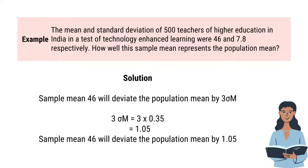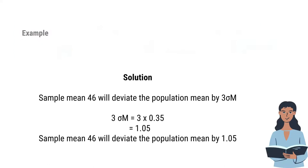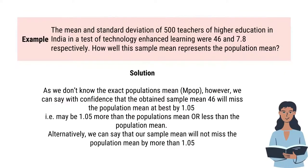The sample mean of 46 will deviate from the population mean by 3 sigma. So, 3 sigma equals 3 into standard error of mean, which is 3 into 0.35, equal to 1.05. The sample mean 46 will deviate from the population mean by 1.05. As we do not know the exact population mean, we can say with confidence that the obtained sample mean 46 will miss the population mean at best by 1.05.